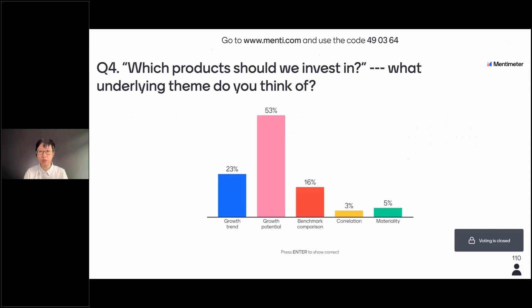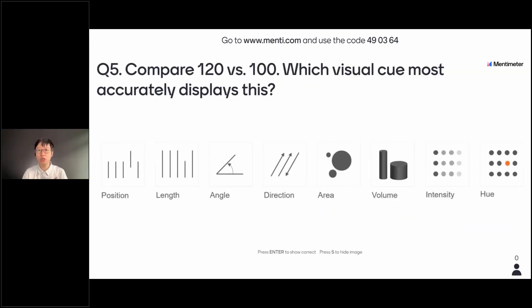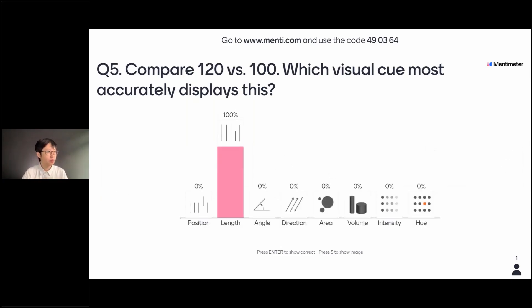So let's get over to our polls. If you have to show and contrast the values 120 and 100, which visual cue will you choose? Which visual cue would most accurately display this? We have length and hue. Some chose volume. If you want to juxtapose 120 and 100, which one would most accurately display this? Now, all of them can display this, but which one would be perceived the most accurately?